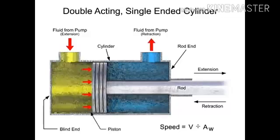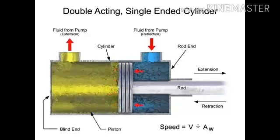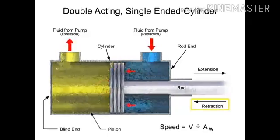Since the rod end side fills with fluid more quickly, the cylinder will always retract faster than it can extend.